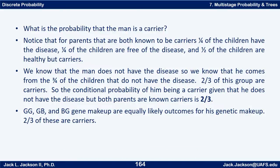So what is the probability that the man is a carrier? We know that both parents are known carriers and we also know that he's free of the disease. This is now a conditional probability. We know he's not in the group with two bad genes. Three-fourths of all children don't have the disease — he's in that group. Two-thirds of that group are carriers. So the conditional probability of him being a carrier, given that he does not have the disease but both parents are known carriers, is two-thirds.